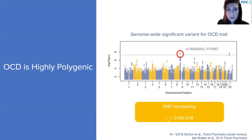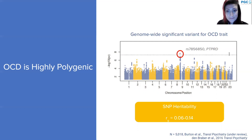When we look at SNP heritability for OCD symptoms and traits, it does seem to be a bit lower than what we see for OCD diagnosis. The reason for that is still unclear, although it seems to occur in other disorders like ADHD. There is also a large initiative within the PGC-OCD group to conduct a large genome-wide association study of OCD compulsive symptoms and traits, which is currently ongoing.